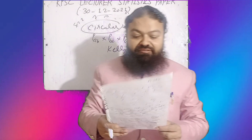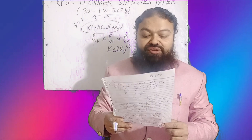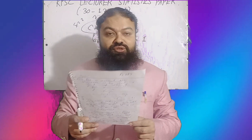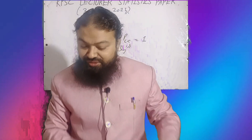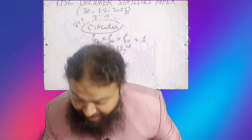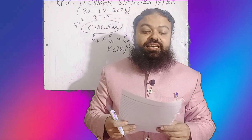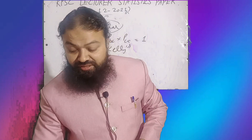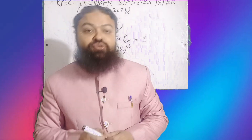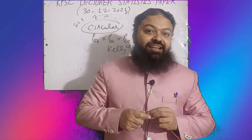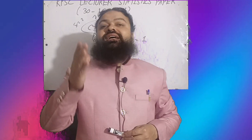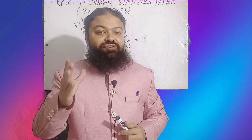The next question: which is the raw score that has been transformed into standard deviation units? The correct option is the z-score. The last question: the empirical rule can generally be applied to bell-shaped distributions. Bell-shaped distribution is the correct option.